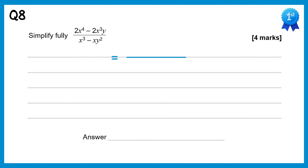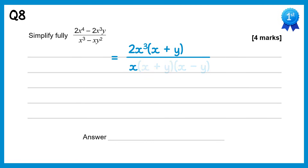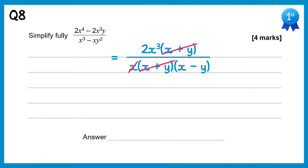If we factorise the top of this one we get 2x cubed times x plus y, and on the bottom x times x squared minus y. But x squared minus y is the difference of two squares, so we could replace this with x plus y times x minus y. We can now cancel the factors of x plus y, and also the x on the bottom can cancel with one of the x's from the top, so instead of x cubed it's x squared. We end up with 2x squared over x minus y.